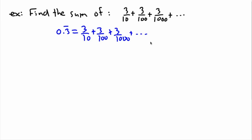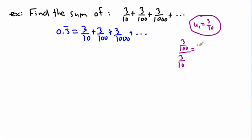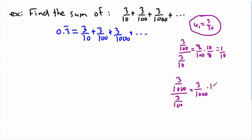Using this as a worked example for infinite geometric series: first check if it's geometric. We know u1 equals 3 over 10. To find r, divide the second term by the first: 3 over 100 divided by 3 over 10 equals 3 over 100 times 10 over 3, which gives 10 over 100, reducing to 1 over 10. Checking the next ratio: 3 over 1000 divided by 3 over 100 also gives 1 over 10. Therefore, the common ratio r equals 1 over 10.